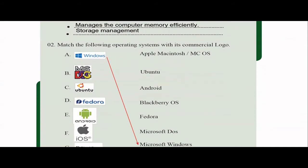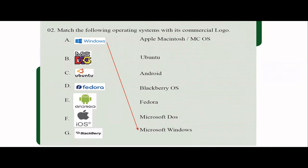In the next activity, they're asking you to match the following operating systems with their commercial logos. This is very easy because the logo itself has the name. This is the Microsoft Windows logo, and this is Microsoft DOS — remember, this was the early operating system where command line interfaces were used. This is Ubuntu, this is Fedora. These three are mobile-related operating systems: Android, iOS, and the Apple Macintosh operating system. And this one is BlackBerry OS.